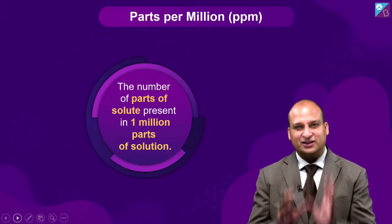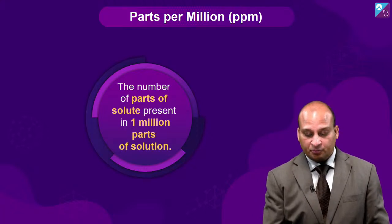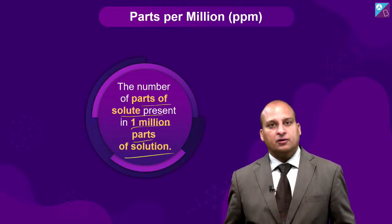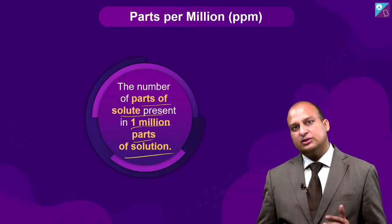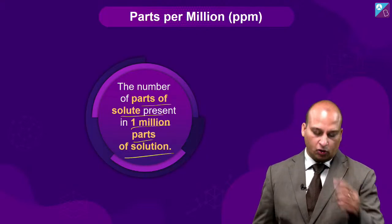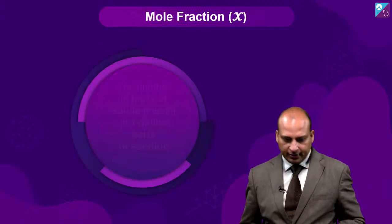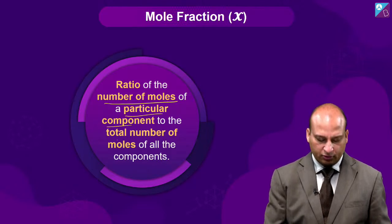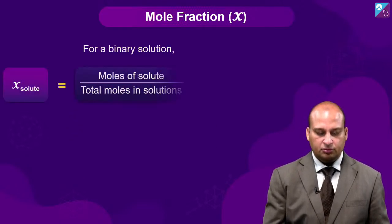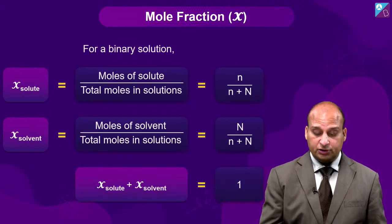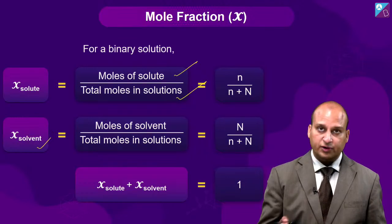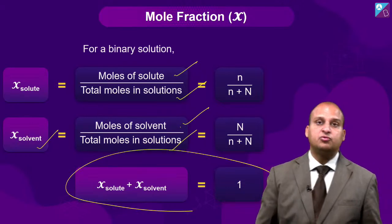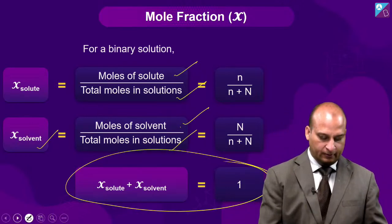Parts per million (ppm) is an important concentration term where students often make mistakes. It is the number of parts of solute present in 1 million parts of solution. Next is mole fraction: the mole fraction of a component is the ratio of number of moles of that particular component upon total number of moles. Mole fraction of solute is moles of solute upon total moles in solution; mole fraction of solvent is moles of solvent upon total moles. Please remember the sum of mole fractions is always equal to 1.